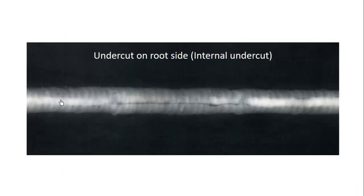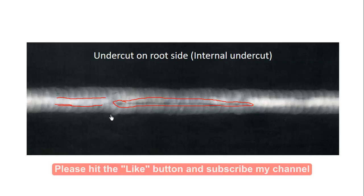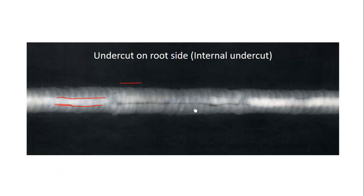In this photo you can recognize the root portion — the root run. On the root run you can see this dark line, which is the undercut. You may ask how we differentiate this from lack of fusion, which also occurs at this edge. Lack of fusion will always appear as a very straight line, but here the dark line is not straight — hence it is an internal undercut. That is how you differentiate between undercut and lack of fusion.